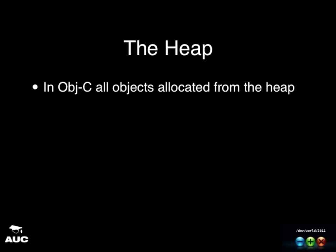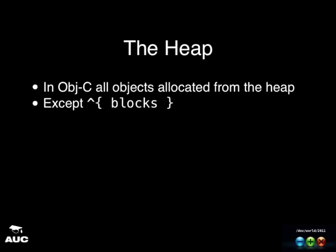A couple of quick points about the heap. In Objective-C, all objects are allocated from the heap — you can't have an object on the stack. You can have an object pointer on the stack but not an object. That contrasts with C++, where you can have objects on the stack. The exception is blocks: blocks are created initially on the stack. If you want to keep a block around after you leave the scope in which it was created, you need to copy it. You can send a copy message to a block, and that will create a copy on the heap.